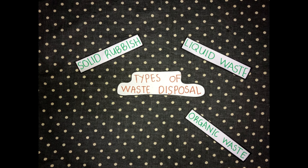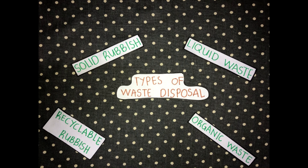Organic waste. It is common in households. For example: food waste, garden waste, and rotten meat. Recyclable rubbish refers to waste items that can be converted into products that can be used again. For example, paper, metals, furniture, and organic waste can all be recycled.